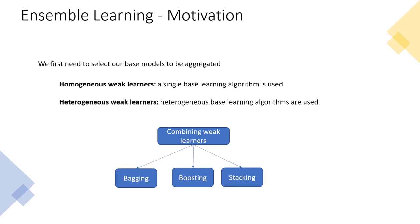There are two major categories of ensemble methods: homogeneous weak learners, which use a single base learning algorithm (e.g., all decision trees), and heterogeneous weak learners, which combine more than one type of decision maker. For today's lecture we will cover two homogeneous methods — bagging and boosting — and mention stacking as a heterogeneous method. We will start with bagging, which is simpler than boosting.